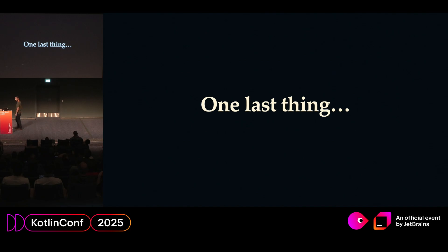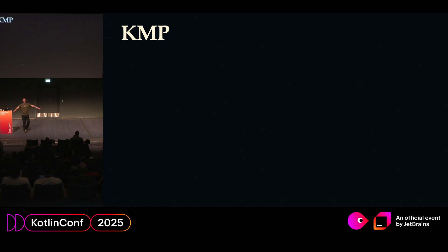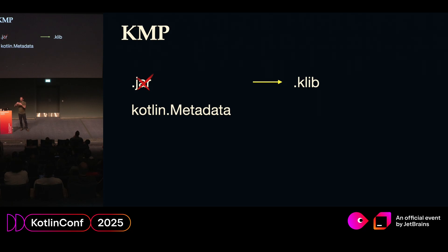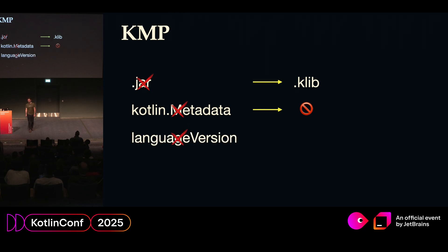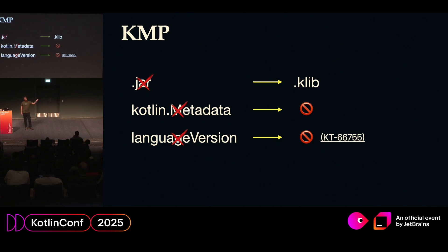We're almost done. There is just one last thing — I lied during most of this presentation. Everything I talked about was for the JVM, and the JVM is something. But if you're doing KMP, you don't have a jar anymore; you have a Klib. And since you don't have a jar, you don't have a JVM annotation either, so you can forget about metadata. And sadly, you can forget about language version — this is not supported yet by the Kotlin Multiplatform ecosystem and Kotlin Native. So if you bump your Kotlin Gradle plugin and you're releasing a native library, you're forcing all your users to use the same version of Kotlin, which can be a pain as more users adopt Kotlin Multiplatform.